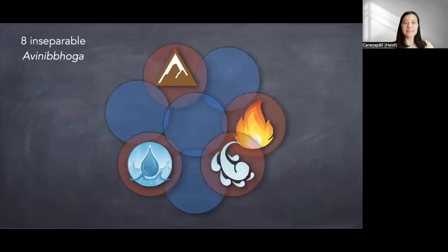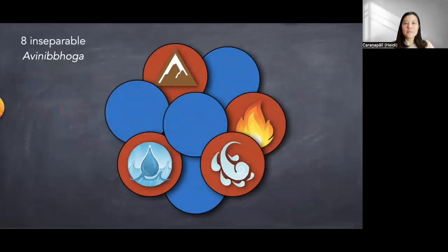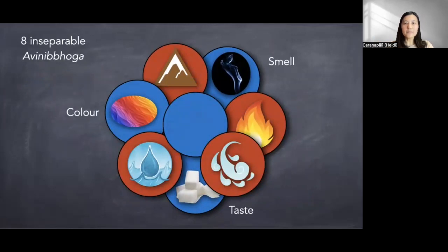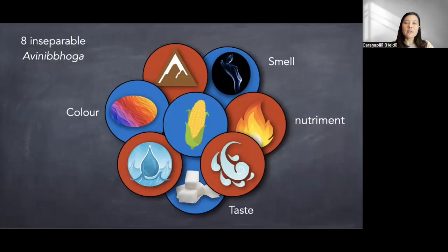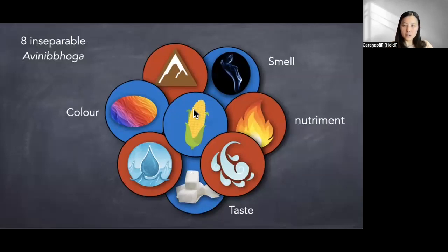Let's see what are the other four kinds of matter that must always be there. We have smell, color, and taste, as well as nutriment. Any kind of material property — be it inside the body or outside the body, internal or external matters, living beings or non-living beings — must always consist of these four primary elements together with smell, color (meaning visibility, the rupa that is visible to the eye), taste, and nutriment as well.